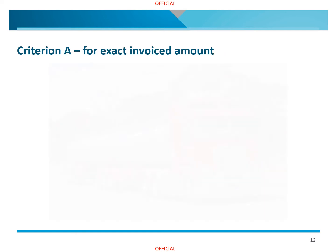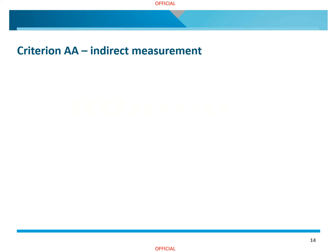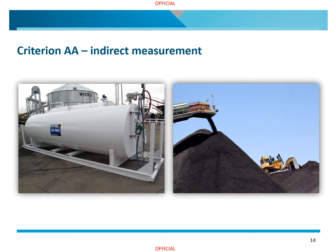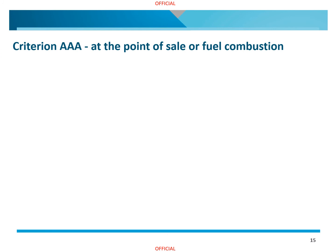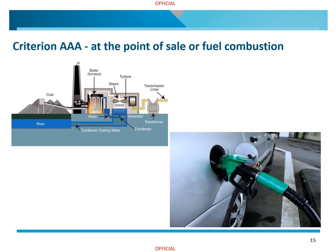Criterion A might be applied, for example, to fuel invoices when diesel is delivered for use at a facility purchased from a vendor. Criterion AA might be used, for example, for changes of purchased or stockpiled fuel for use on site, such as gasoline or coal. Invoiced quantities are adjusted for the estimated change in quantity of the stockpile of fuel during the year, noting that the methods differ by the fuel state, such as gas, liquid, or solid. Criterion AAA might be used, for example, where measurements are taken at the point of combustion of coal used to generate electricity, or at the point of sale via fuel dispensers at petrol stations. These measurements must be undertaken in accordance with measuring equipment and methodologies specified in the determination.